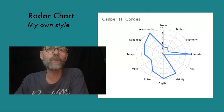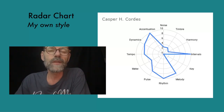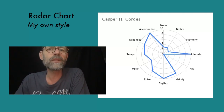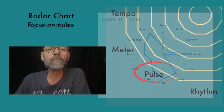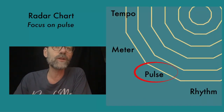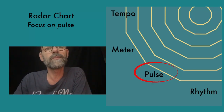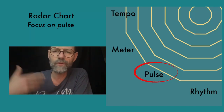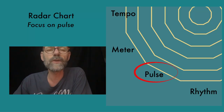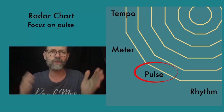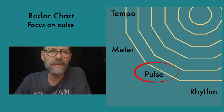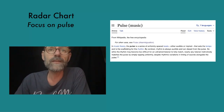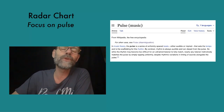I'd like to briefly explore one of the 12 parameters. I've chosen Pulse because it's often considered universal in music. If you take a closer look at one of these parameters, you will find out more about how this specific kind of analysis works. So, a closer look would reveal key features essential to the specific approach I'm trying to work out. Let's turn to the Wikipedia definition: in music theory, the pulse is a series of uniformly spaced beats, either audible or implied, that sets the tempo and is the scaffolding for the rhythm. By contrast, rhythm is always audible and can depart from the pulse.